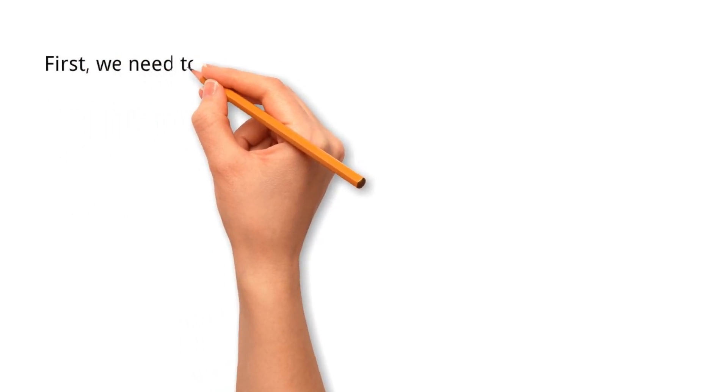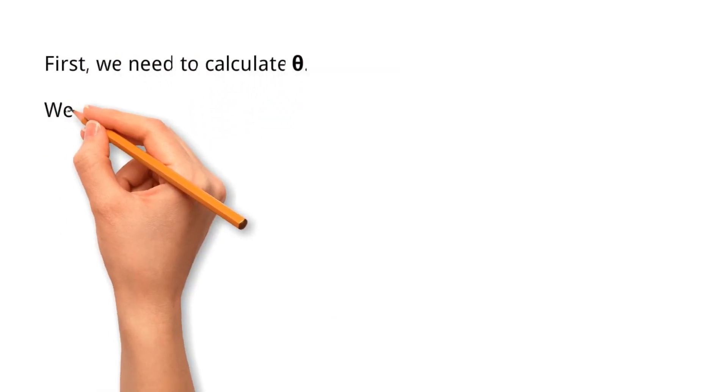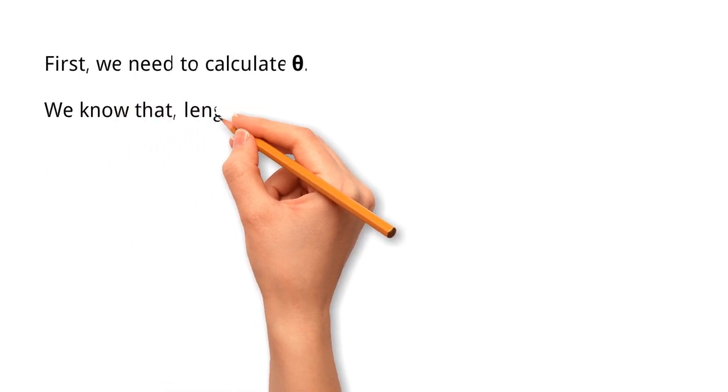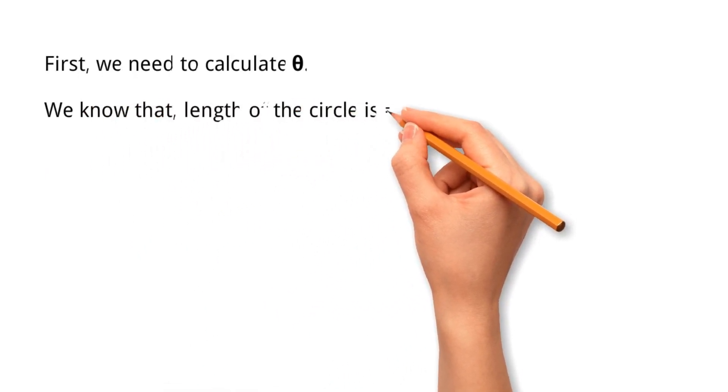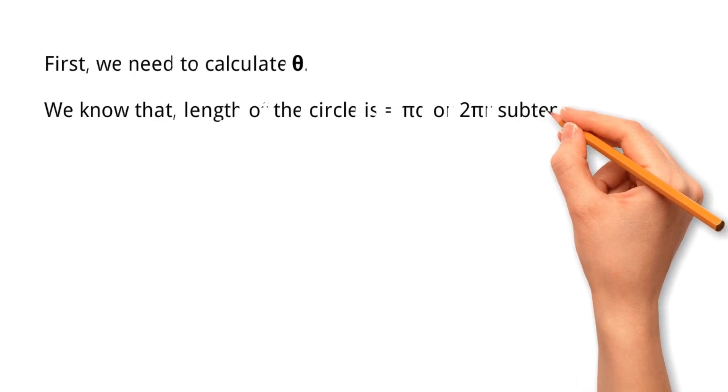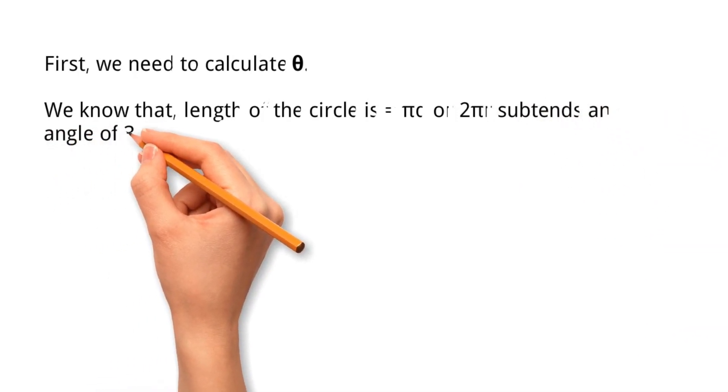First, we need to calculate theta. We know that length of the circle equals pi d, or 2 pi r, subtends an angle of 360 degrees.